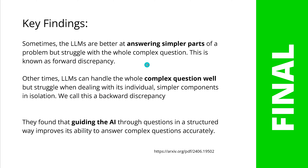In other cases, our LLMs can handle the whole complex question very well, but struggle when dealing with its individual simpler components in isolation. We call this a backward discrepancy.